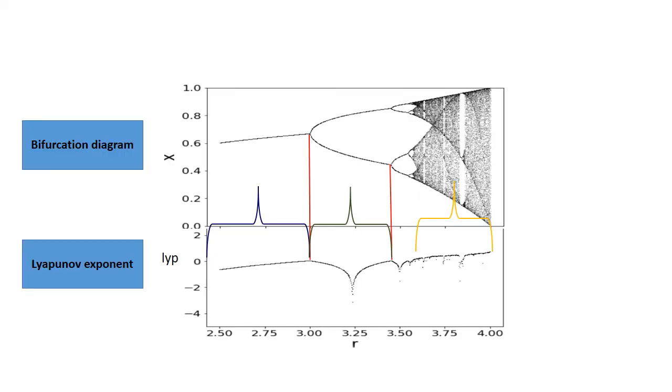Let us cross check the dynamic behavior of the logistic map with the bifurcation diagram and the Lyapunov exponent. Notice different colors in the graph.